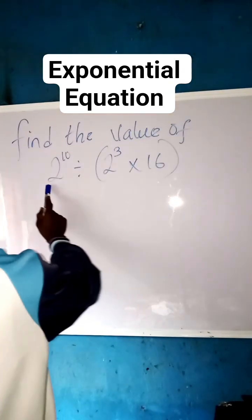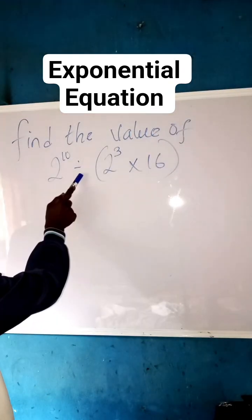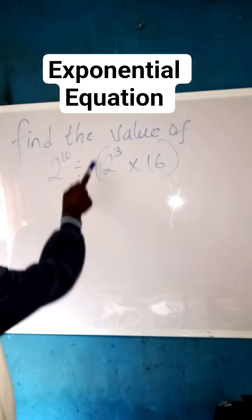Find the value of 2 raised to the power of 10 divided by 2 raised to the power of 3, multiplied by 16.